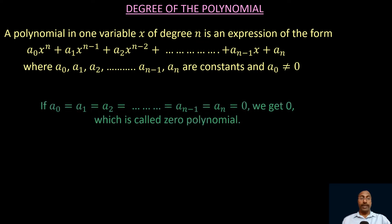If a₀ equals a₁ equals a₂ equals ... equals aₙ equals 0, then all constants are zero and the polynomial becomes 0. This is called the zero polynomial.